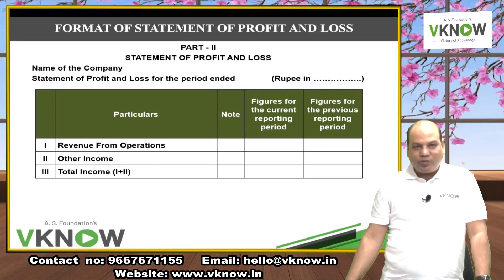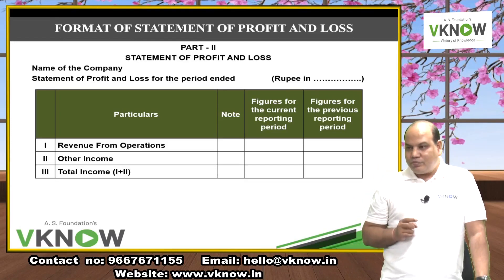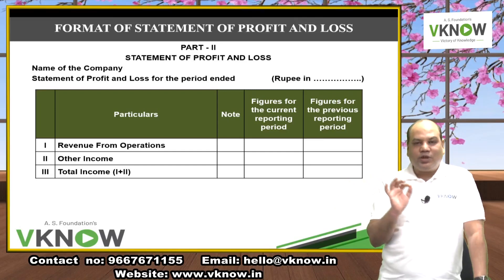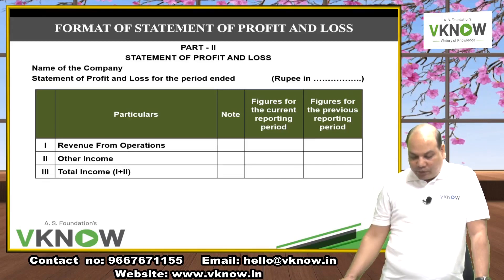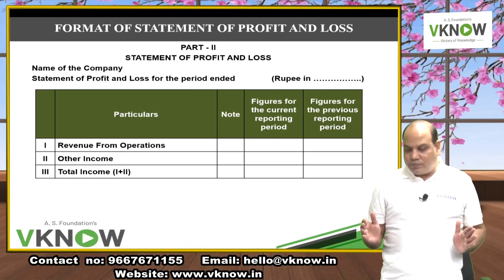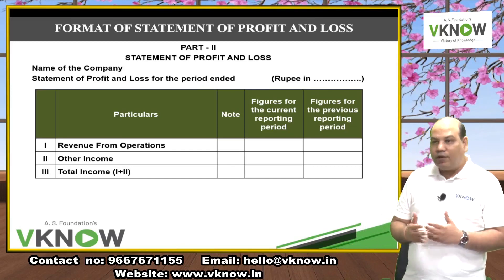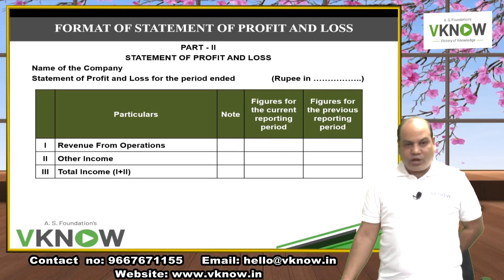The heading for the P&L Account is 'Statement of Profit and Loss.' IFRS companies write 'Statement of Total Comprehensive Income,' but we will write 'Statement of Profit and Loss.' Then write the company name, followed by 'for the period ended.' The P&L covers one period — normally one year, but could be quarterly or half-yearly.